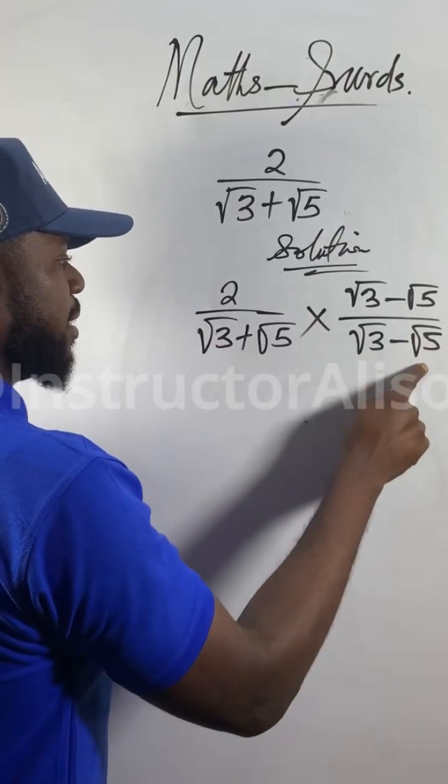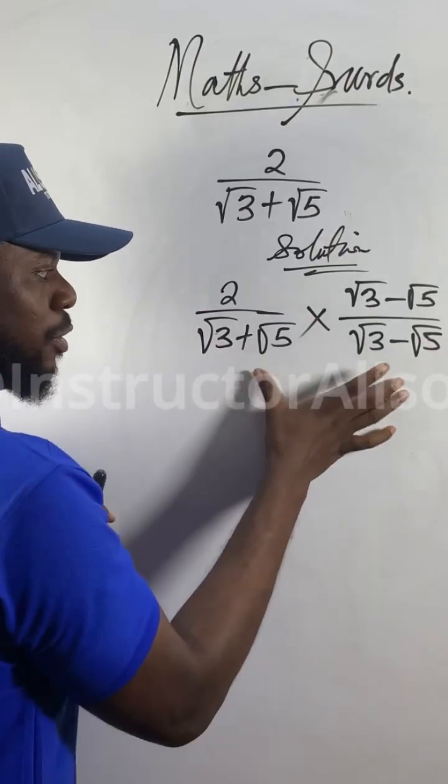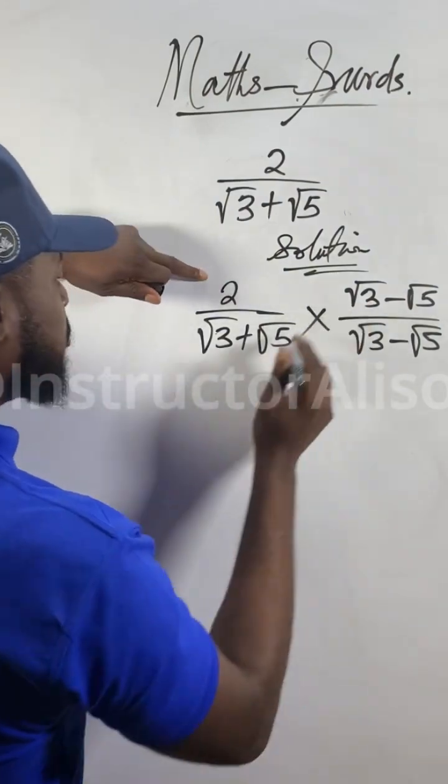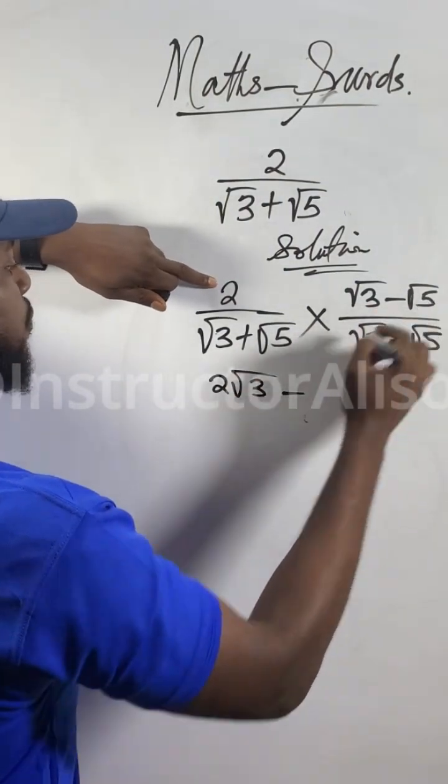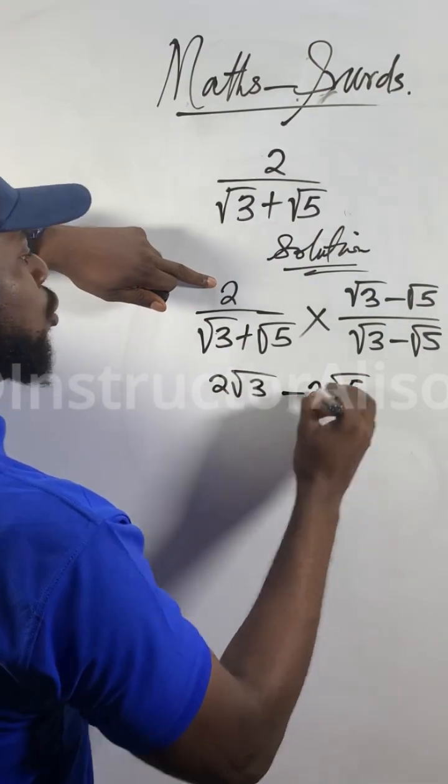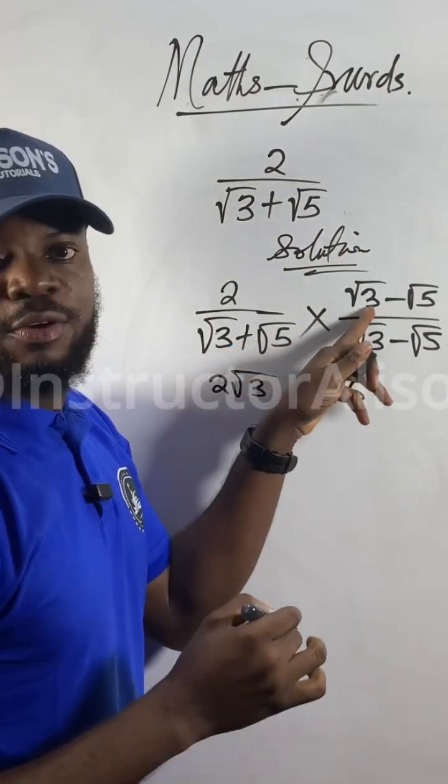Similarly, this one will multiply this one and still multiply this one. In the denominator, two times √3 will give us 2√3, minus two times √5 will give us 2√5. It'll work - you can multiply this one instead.